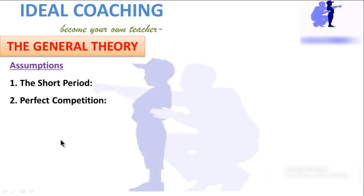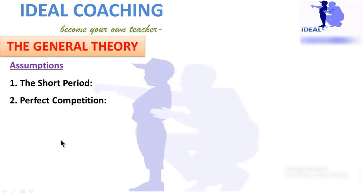The second assumption he took was perfect competition. He assumed that there is a fairly high degree of competition in the markets. Because if there is monopoly, its degree will remain unchanged — so how would this theory work?